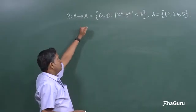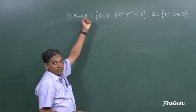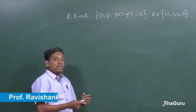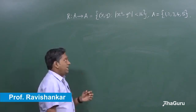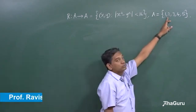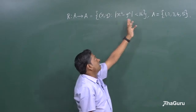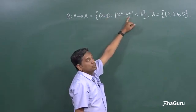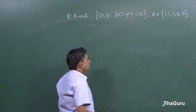We are given that R is a relation from set A to set A. If the question says R is a relation on A, that means it is a relation from A to A, where A is given by 1, 2, 3, 4, 5 are the elements and R is given by this condition that x, y should satisfy x squared minus y squared modulus is less than 16.